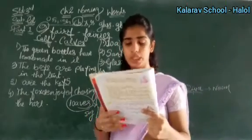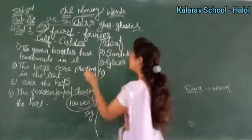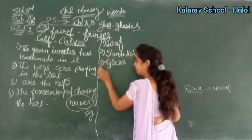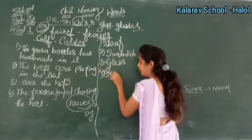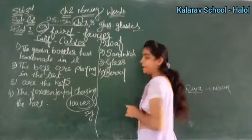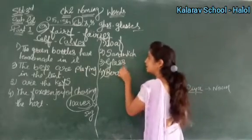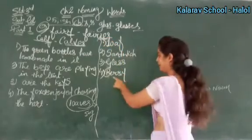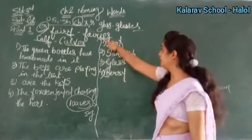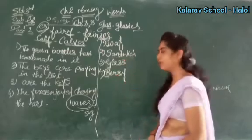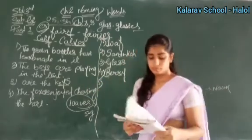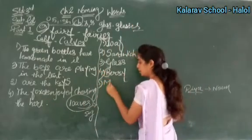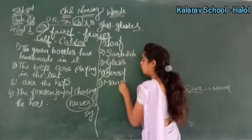Berries and mangoes. Mangoes — M-A-N-G-O — O se end hota hai, toh ES lagaya: mangoes. So singular is mango.